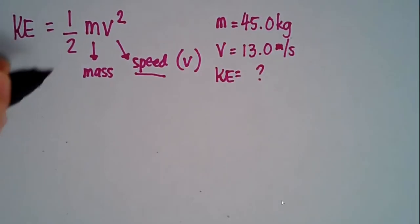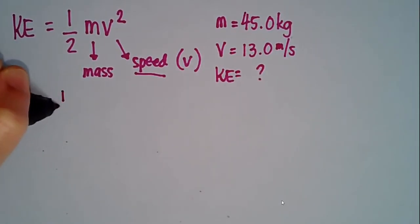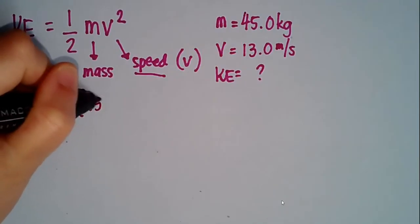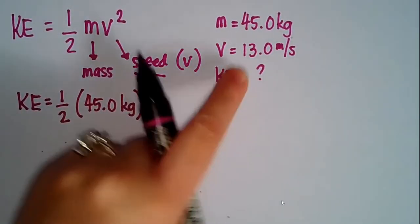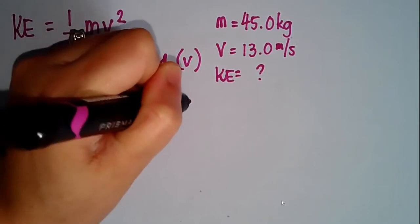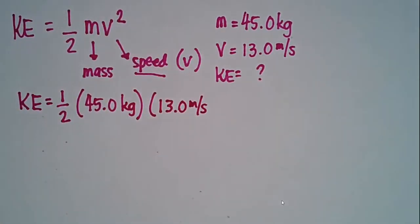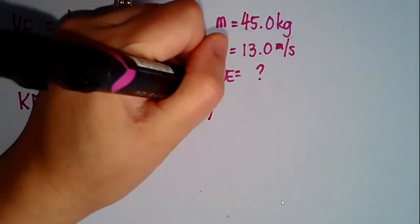So let's go ahead and do that together. KE is equal to 1/2, your m is 45, so you have 45 kilograms, and then you have your v which is 13, so you will have 13.0 meters per second. But you have to remember that you have to square it, meaning you have to multiply this by itself.